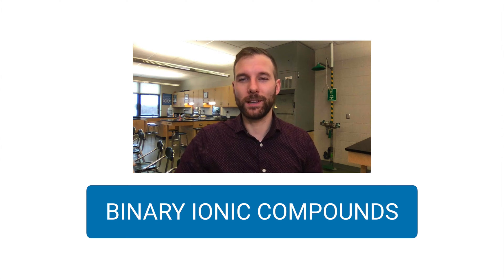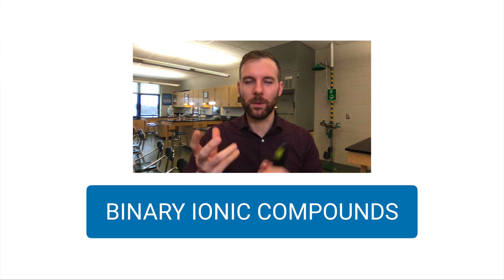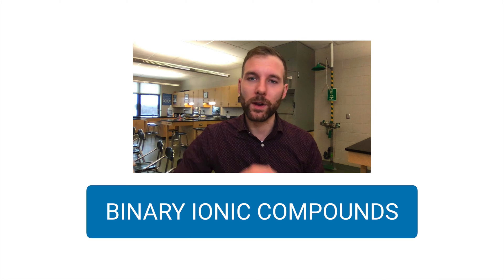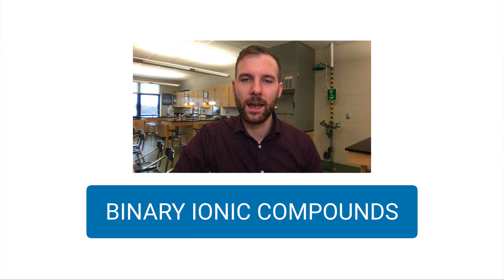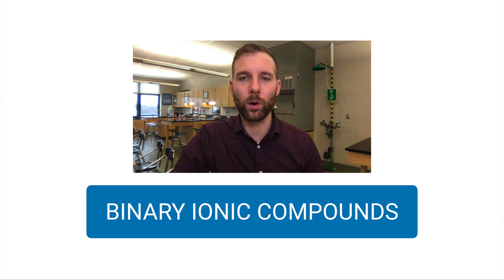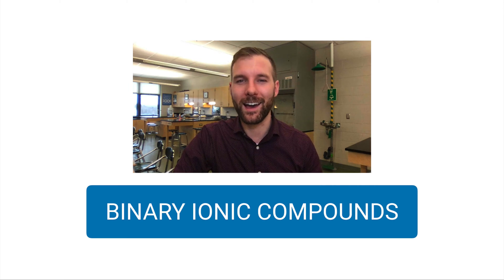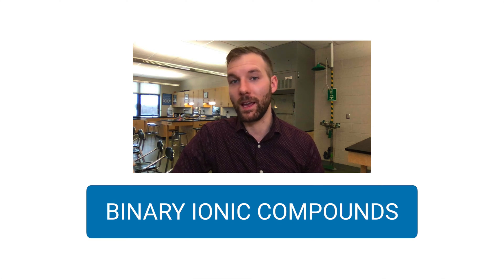In this video we're looking at binary ionic compounds. Binary means two parts — two elements within it. Ionic is metal and non-metal where we have a transfer of electrons. A metal gives a non-metal a certain number of electrons. A compound is just a molecule, a substance made up of two or more different elements. So essentially we're looking at one metal, one non-metal — how do we name them and how do we write formulas for them?